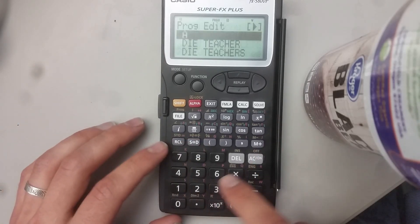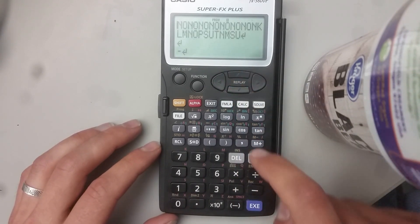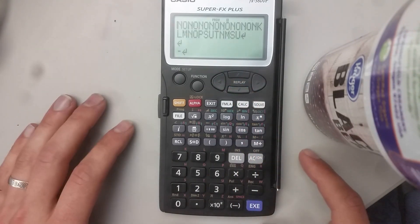Now let's edit Die Teachers. So we'll go into number three and we'll go into Die Teachers right there. And there you go. There you have it.